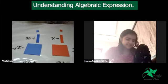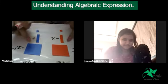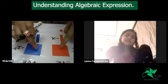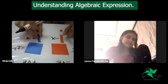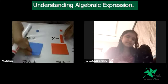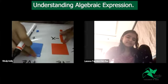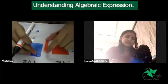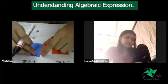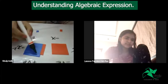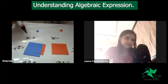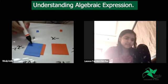Now look at here. This represents x. If you place it like this — x multiplied by x — you get the shape of a square. So x times x is x squared. That is why it is called x square.